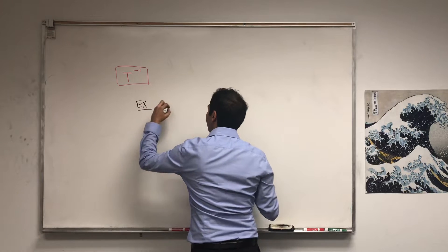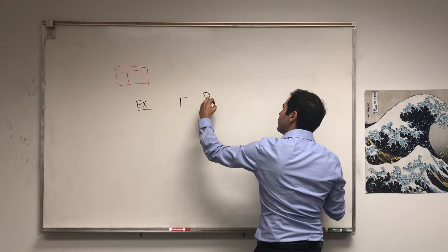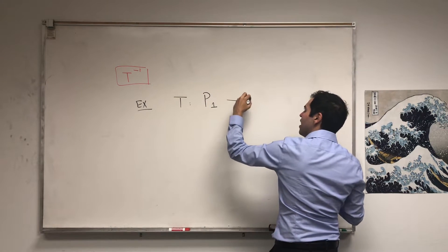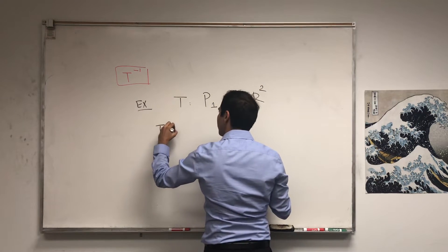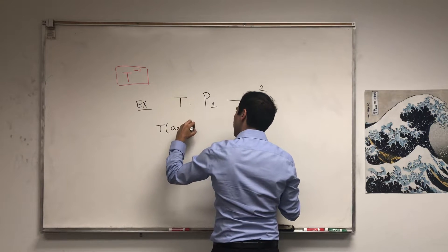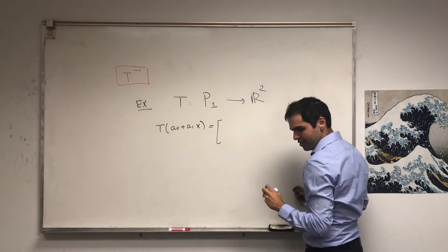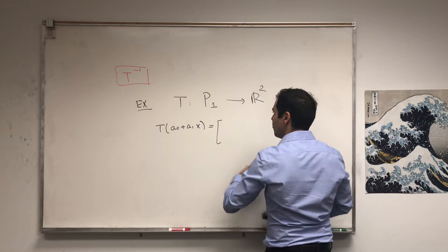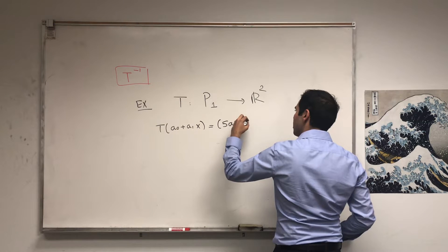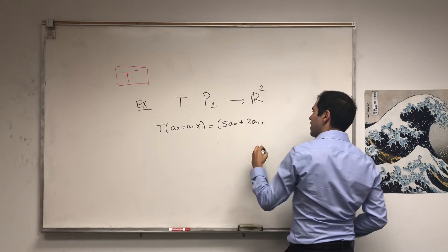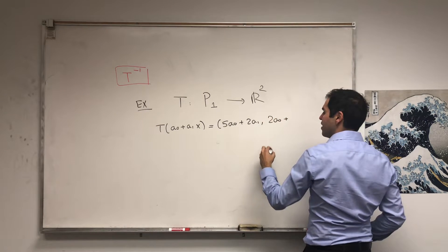So, for example, consider the following linear transformation. T takes polynomials of degree less than or equal to 1 as an input, and spits out a vector in R2. In the following sense: T of a0 plus a1x equals 5a0 plus 2a1, and then 2a0 plus a1.